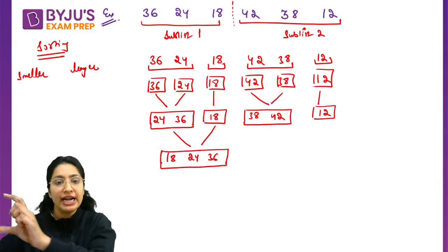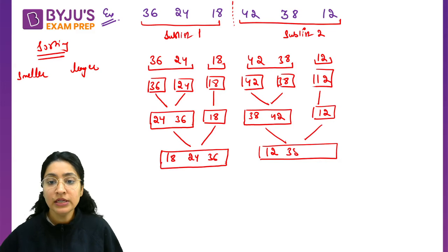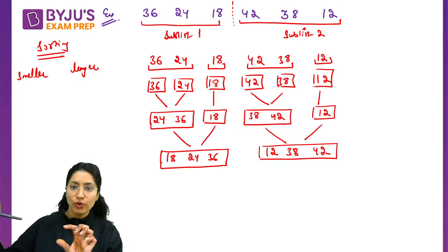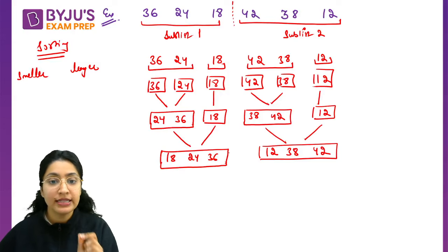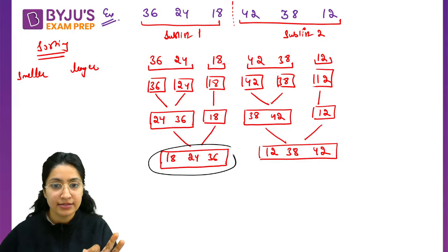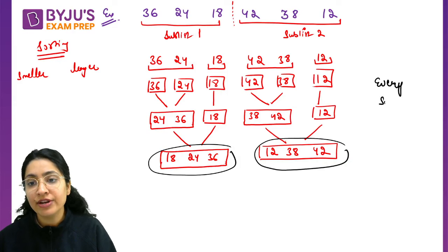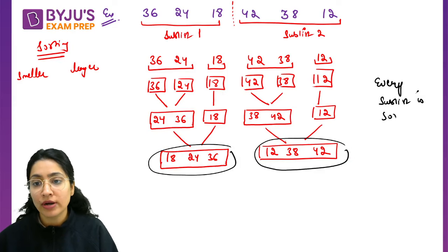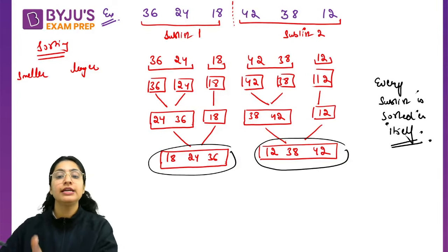Apply this same logic on the right portion. If we apply this logic, first you keep 12, then you keep 38, then you keep 42. Sorted, right? This is the rule of merge sort - this is one sublist, this is the second sublist. The rule says that every sublist is sorted in itself. You can see 18, 24, 36 is sorted. 12, 38, 42 is sorted.